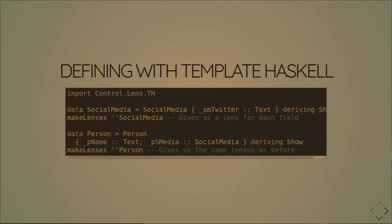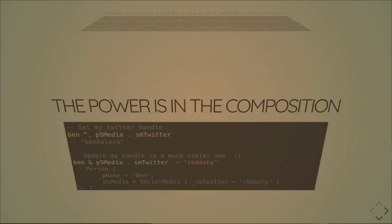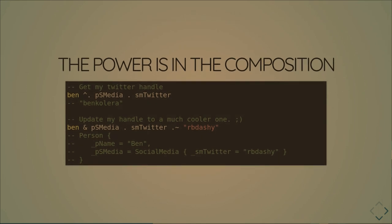We can do exactly the same thing with Template Haskell, which is the recommended way to go. We have a SocialMedia type with some stuff inside it, and with `makeLenses`, Template Haskell will go through every record field and make a lens for it, stripping the underscore off. So we get exactly the same lenses as before: a `pName` lens, a `socialMedia` lens that drills into this type, and then a lens on SocialMedia that gets a Twitter handle for a person.